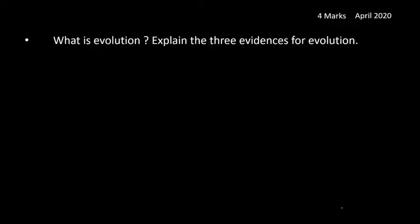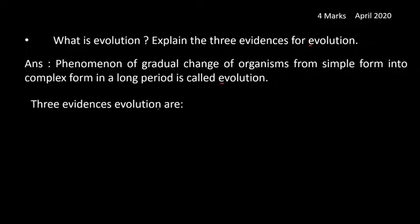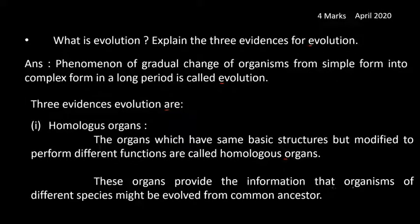Next question: what is evolution? Explain the three evidences for evolution. Evolution is the phenomenon of gradual change of organisms from simple form into complex form over a long period of time. The first evidence is homologous organs — organs which have the same basic structure but are modified to perform different functions. These organs provide information that organisms of different species might have evolved from a common ancestor.